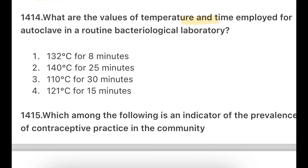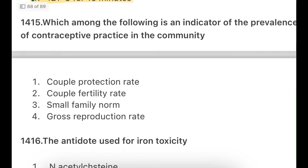Next: What are the values of temperature and time employed for autoclave in a routine bacteriological laboratory? Options: 132°C for 8 minutes, 140°C for 25 minutes, 110°C for 30 minutes, 121°C for 15 minutes. This is a repeated RRB question. The correct answer is 121°C for 15 minutes. Sometimes they ask only the temperature, sometimes only the time — temperature is 121°C and time is 15 minutes for autoclaving.